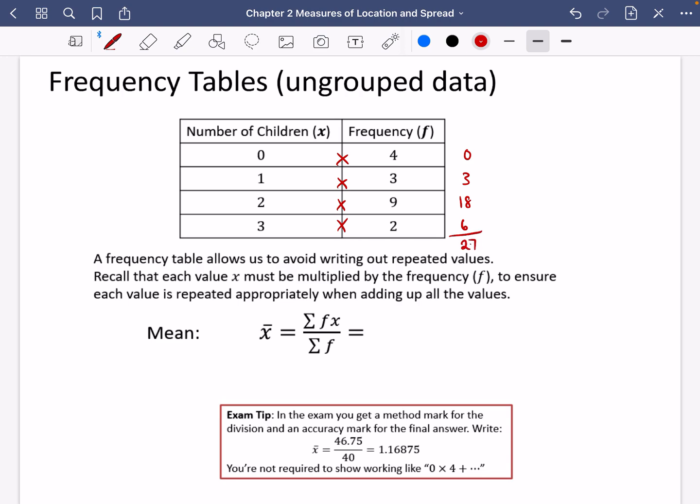What's that going to be, 27? And then you would divide it by how many people there are, how many families there are in total. So what's that, four and three is seven, and nine is 16, and two is 18.